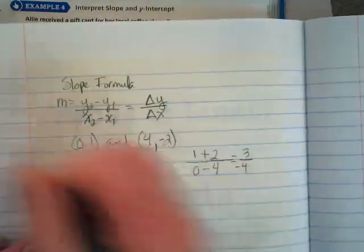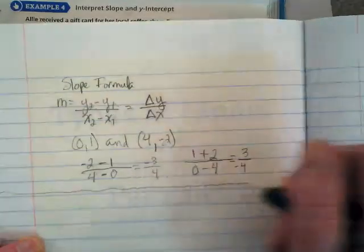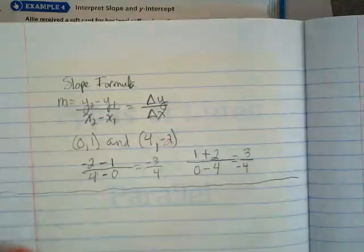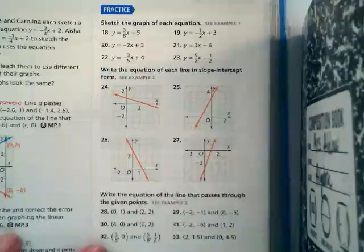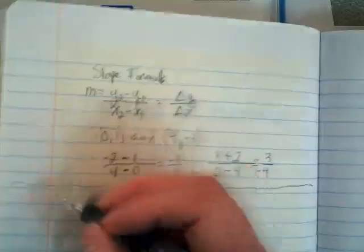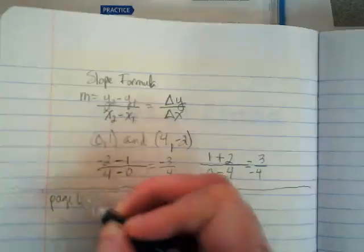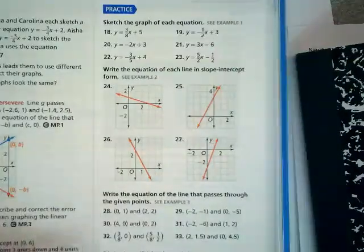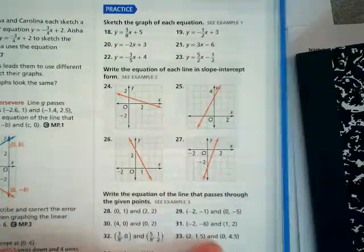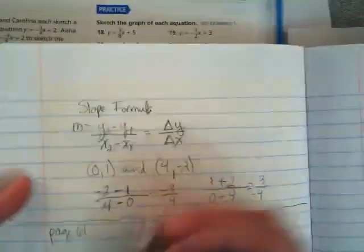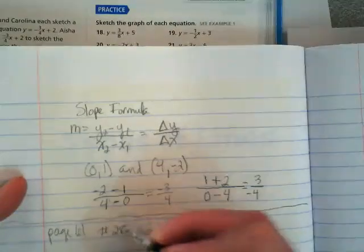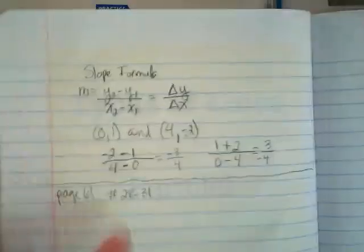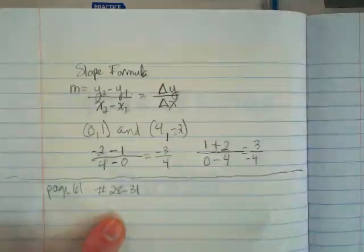And I'm going to have you stop and we're going to do some practice right here before we look at the rest of the chapter. In your book, I'd like you to go to page 61. And you're going to do these numbers here, 28 to 33. Actually, no. Let's just do 28 to 31. Do those 4 practice problems.